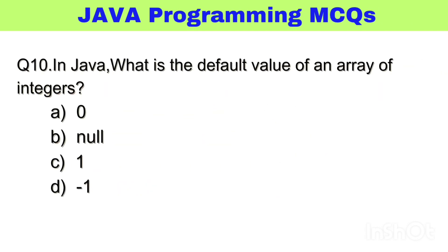Question number 10. In Java, what is the default value of an array of integers? The right answer, option A: zero.